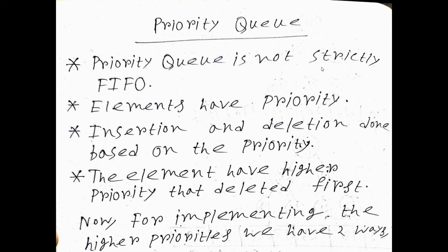Every element in the priority queue has its own priority. Insertion and deletion is done on the basis of the priority of the elements. The element having the higher priority is deleted first.